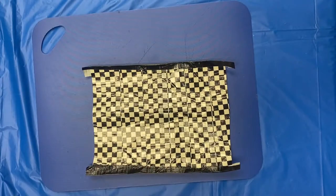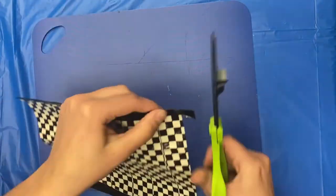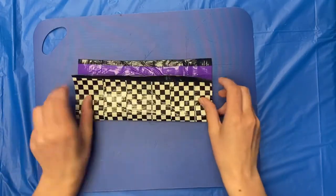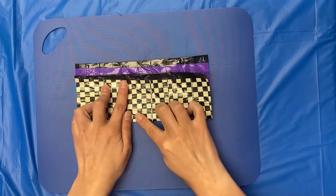Cut off the extra. Fold the bottom up. Leave a slight gap on top.